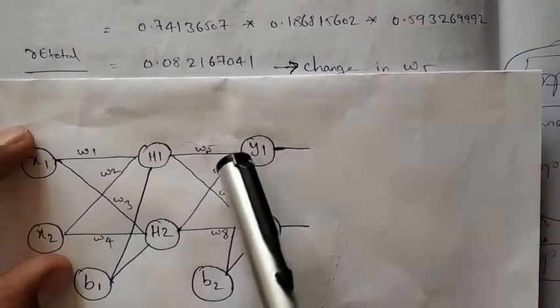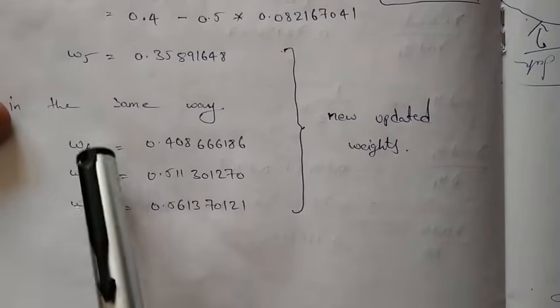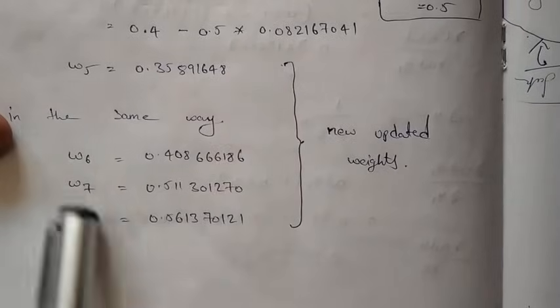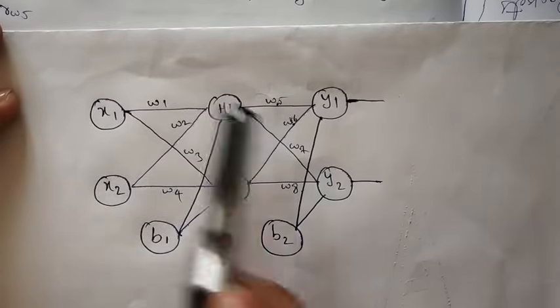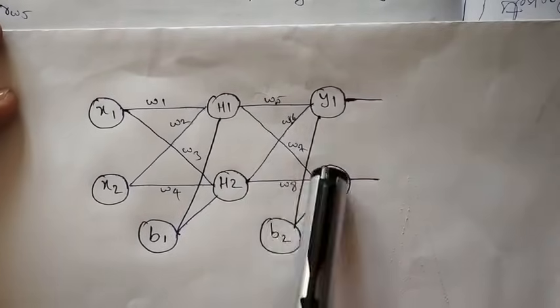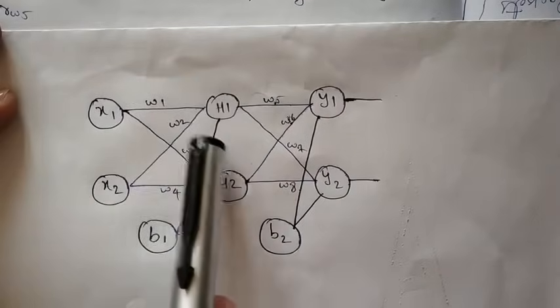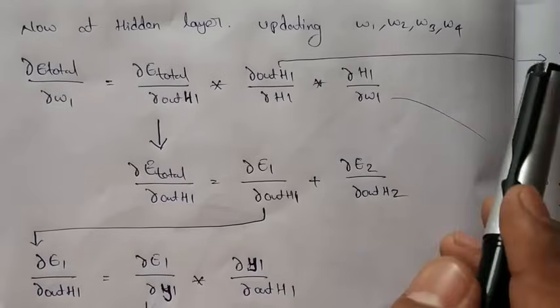In the same way, we update w6. We have backpropagated up to the output layer, updating w5 and w6. Now at the hidden layer, we are updating w1, w2, w3, and w4 values.